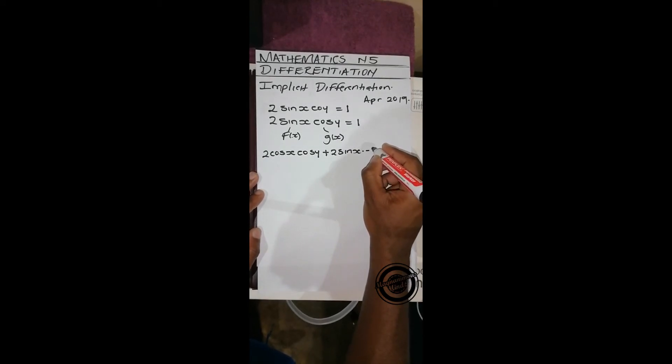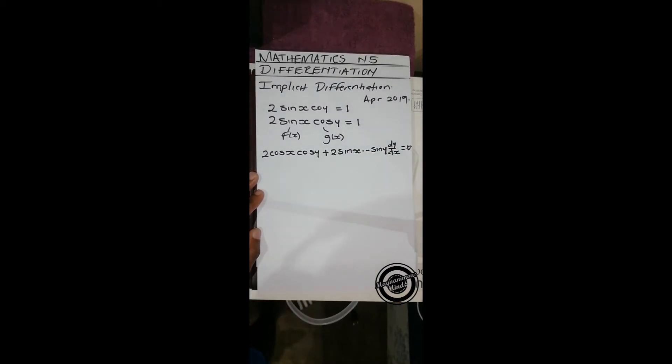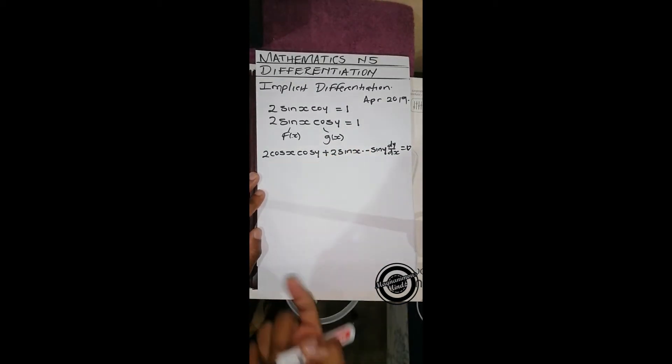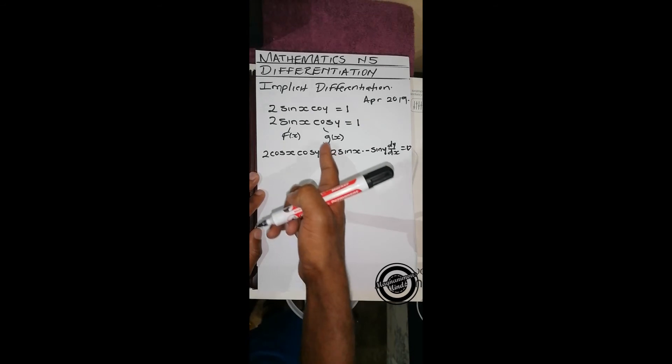times minus sin y dy/dx equals 0, because this is a constant. When we differentiate